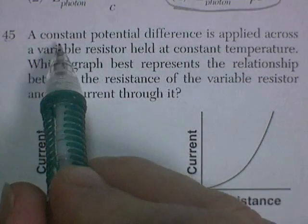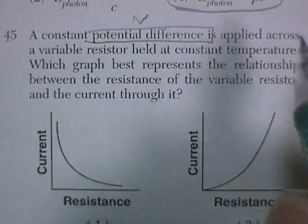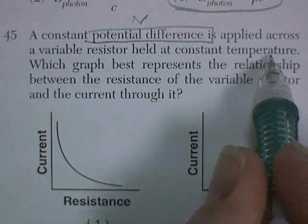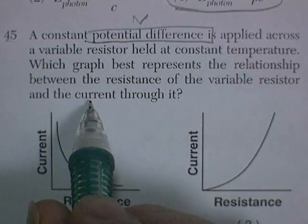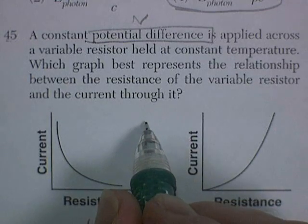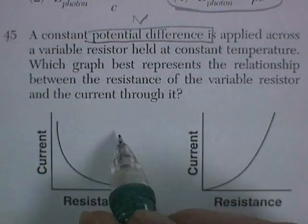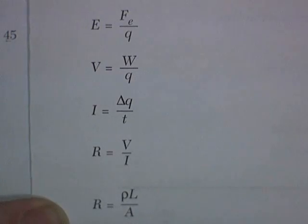Question 45. A constant potential difference, voltage is the same, is applied across a variable resistor at a constant temperature. Which graph represents a relationship between resistance and current. So I need some kind of relationship between resistance and current, and I like to do my formula first.